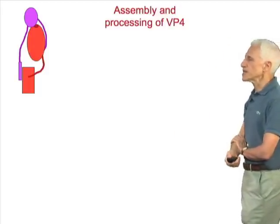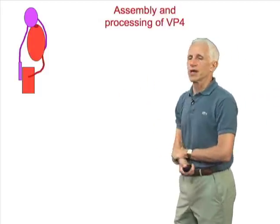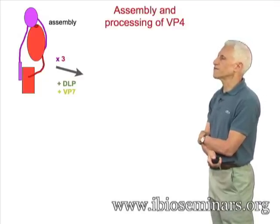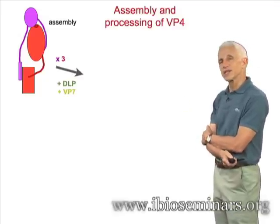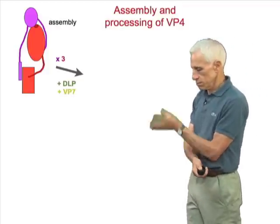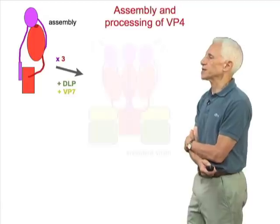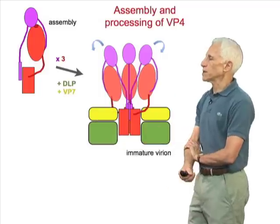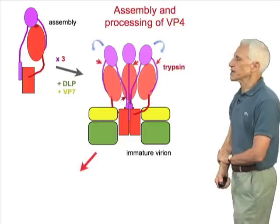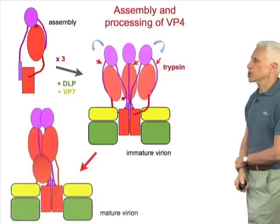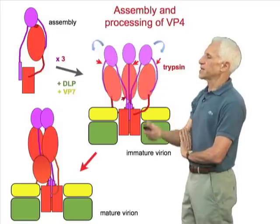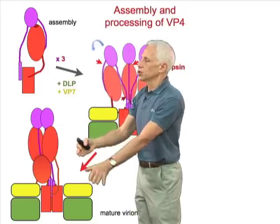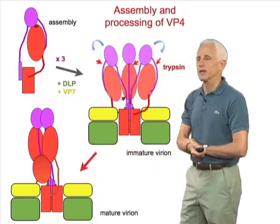A separate X-ray structure of this region yields a lectin-like domain that binds sialic acid, which is a receptor for rhesus rotavirus from which these proteins in our experiments were derived. We therefore believe that the protein, synthesized as a monomer, combines with the double-layered particle—three of them for each of the 60 spike positions corresponding to icosahedral symmetry—and is locked in by VP7, but is flexible until tryptic cleavage occurs.